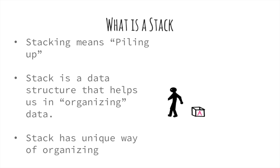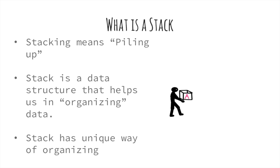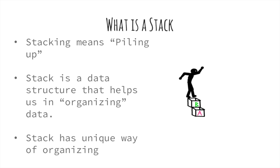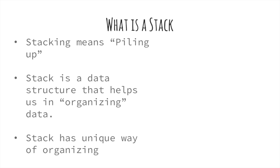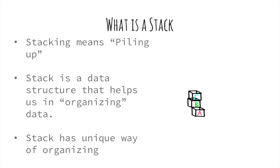What is stack? Stack literally means a pile of objects. In computer science, stack refers to a data structure. Like all data structures, its prime purpose is to organize data. We organize the data so that we can find it when we need it. Stack has a unique way of organizing data — it piles up the data items one on top of the other. This kind of arrangement is also called a sequential organization.